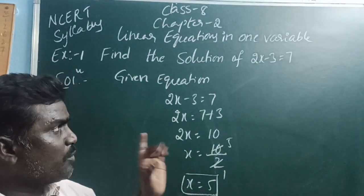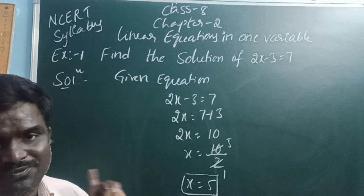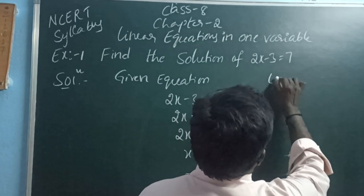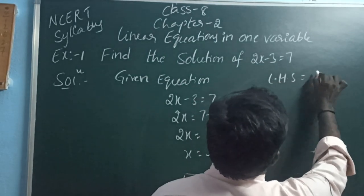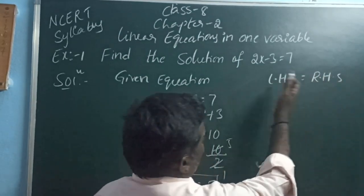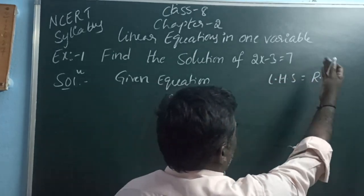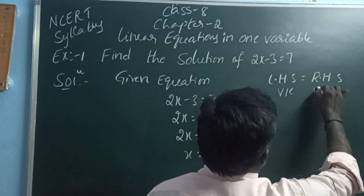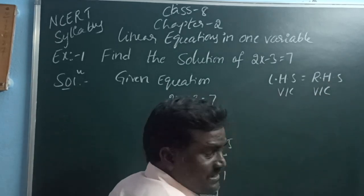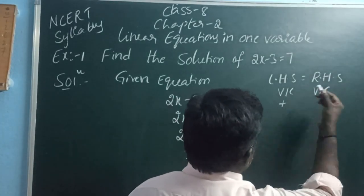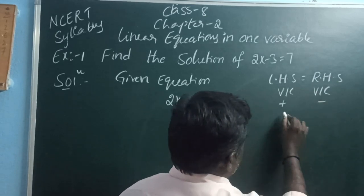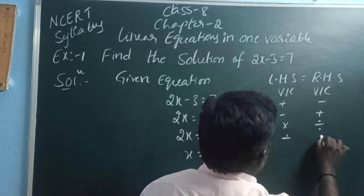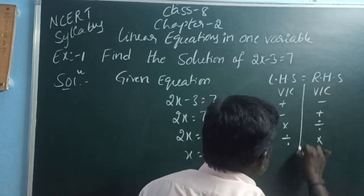This is the solution, zero, or root of the linear equation. A linear equation has one zero, one root, one solution. LHS means left hand side; RHS means right hand side. When a variable or constant moves to the right side, plus becomes minus and minus becomes plus; multiply becomes divide and divide becomes multiply. This method is called the transform method.